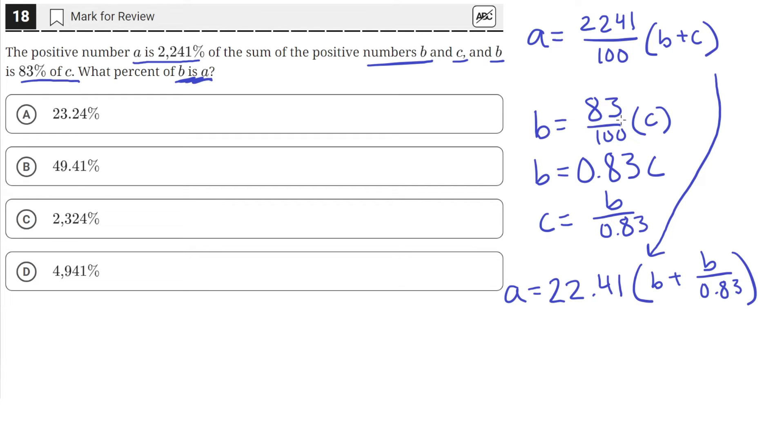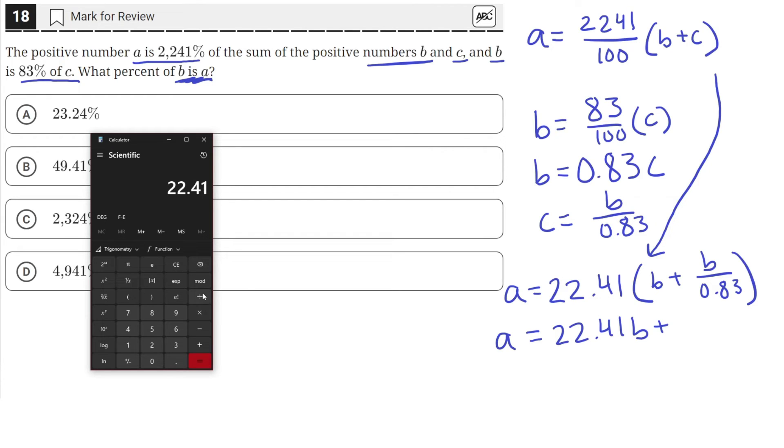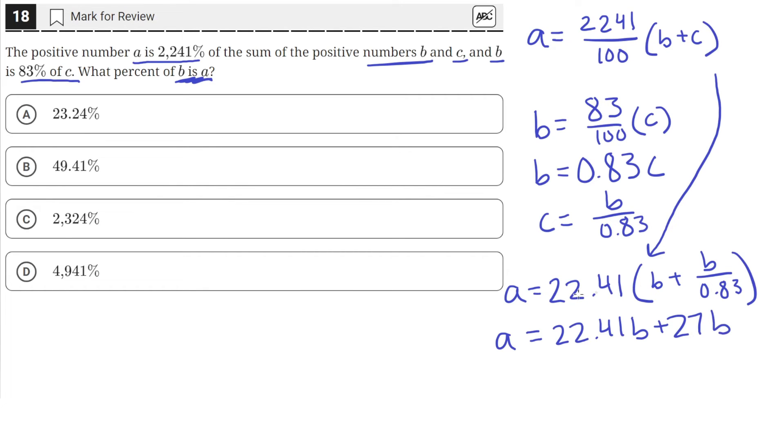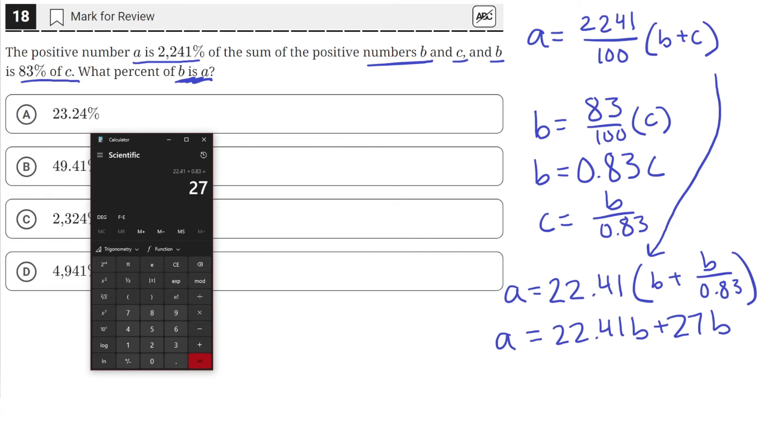So because we rewrote this equation to write C in terms of B, now when we plug this into the first equation, we have A in terms of only B's, no more C's. So now let's just simplify this down. So we're going to have A equals 22.41B plus, so 22.41 divided by 0.83, that's just equal to 27B. So 22.41 multiplied with B over 0.83. We just do 22.41 divided by 0.83 in our calculator, and we get 27B.